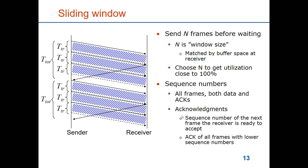We assume that the protocol control information will include sequence numbers which number the frames in increasing order. Both frames and acknowledgements will be numbered. The acknowledgements will contain the number of the next frame that the receiver is ready to receive. An acknowledgement acknowledges all frames with a lower number than the one that has been sent. So if the acknowledgement is sent with number 3, it means that it acknowledges all frames with sequence number lower than 3, and the receiver is ready to receive frame number 3.